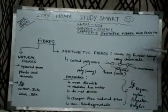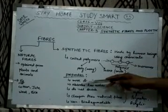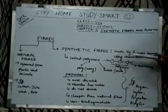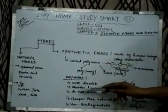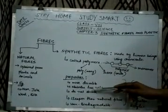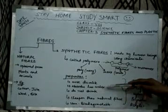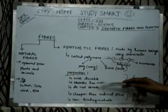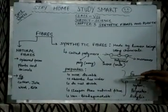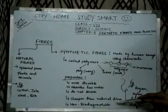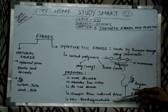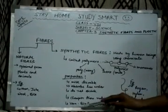The properties of synthetic fibers are: they are more durable than natural fibers, they absorb less water so they dry quickly, they do not shrink so there is no need for ironing, and they are cheaper than natural fibers. However, they are non-biodegradable, so they are not eco-friendly.